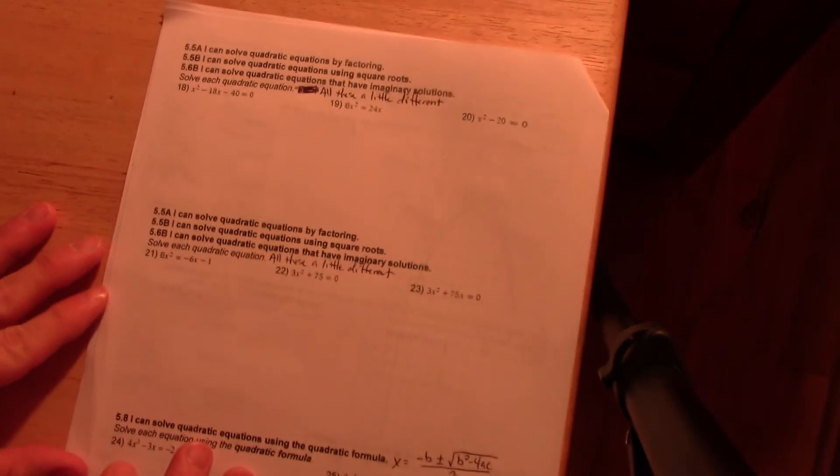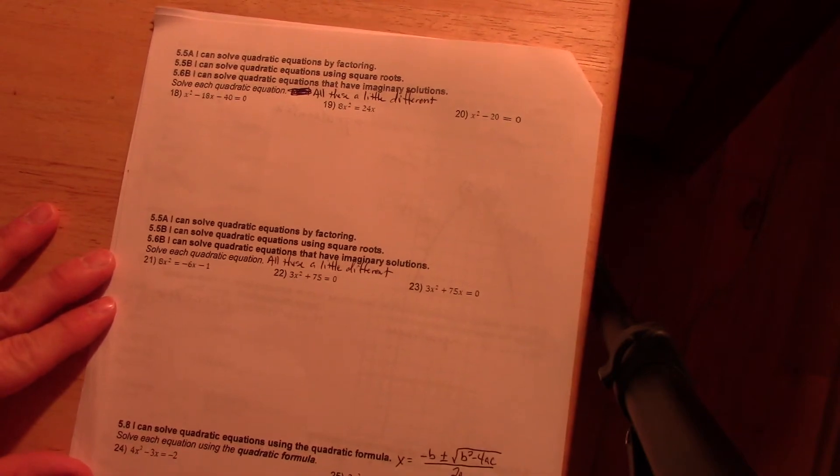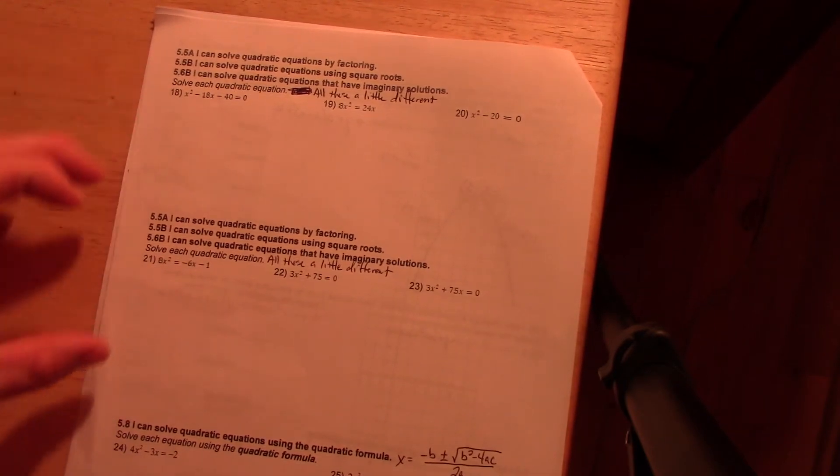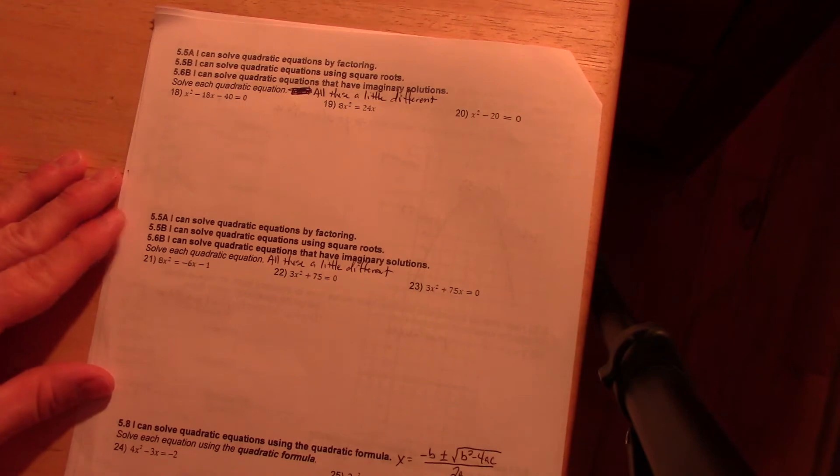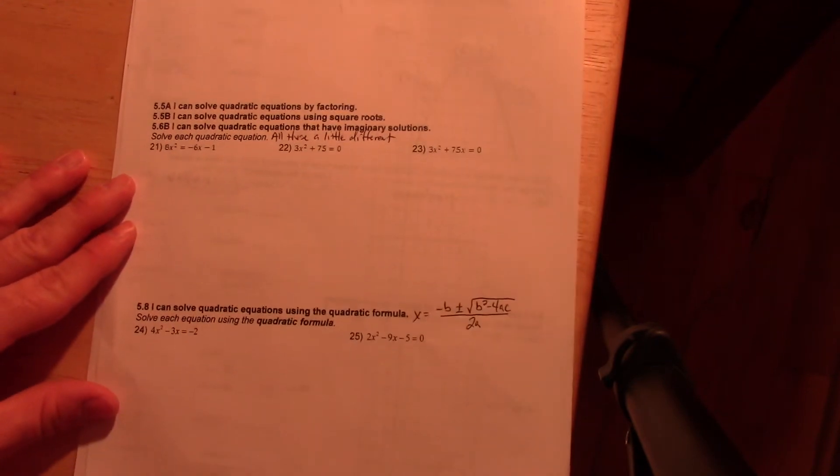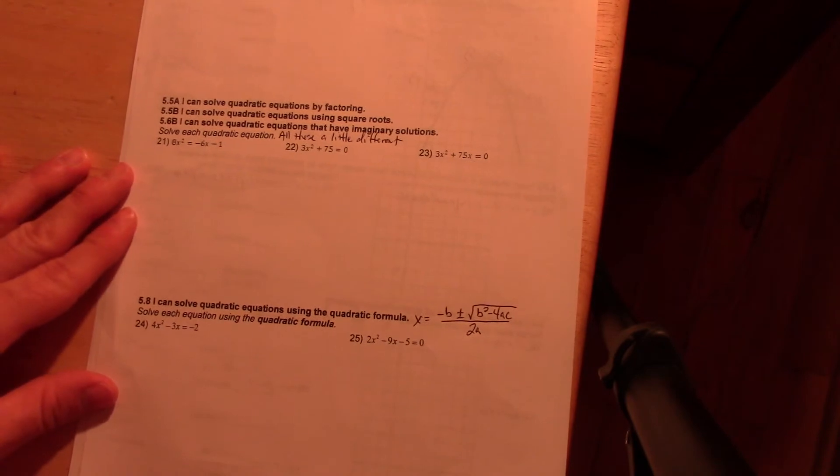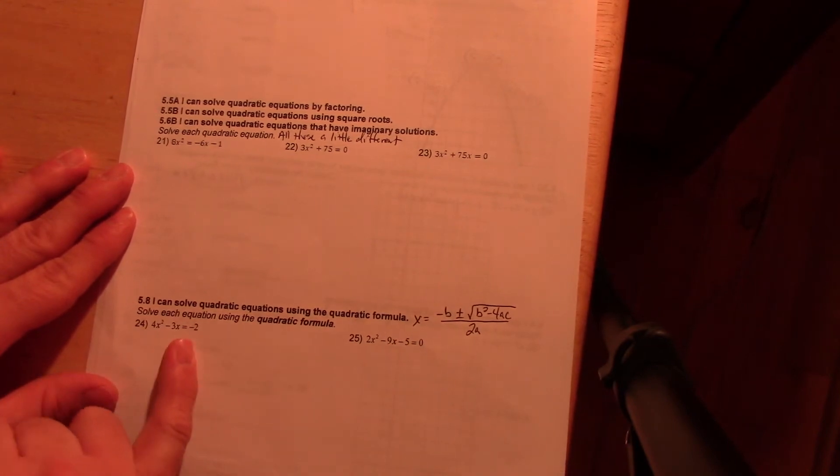I started writing something on the top there, forgive me for that. All of these are a little bit different in terms of how you solve them for 18-23 so I will be going over those individually. Down at the bottom, again, the quadratic formula, which I will write on the board for you, is written right there for you to use. Remember that this always has to equal zero for that to work so this one is good to go.